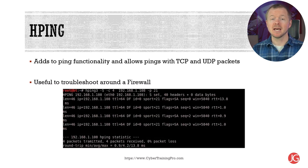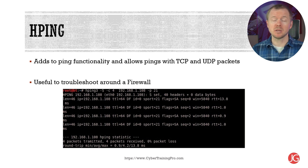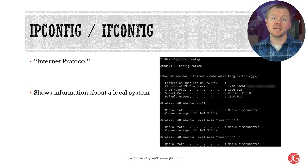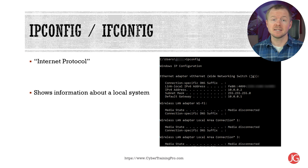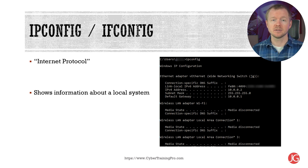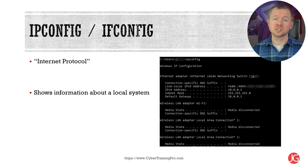Windows systems by default are known for blocking ICMP packets. HPing takes the functionality of Ping and also allows you to send pings with TCP and UDP packets, which is useful if you think a firewall is blocking ICMP traffic. IPconfig, short for internet protocol configuration, shows information about a local system such as the IP address, subnet mask, default gateway, MAC address, and DNS server for all network interface cards installed on that system. IPconfig is for Windows; on Linux you have IFconfig, short for interface configuration. Some commands may require administrator or pseudo-level privileges.